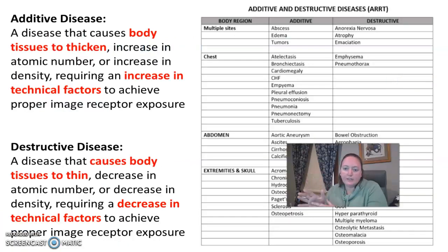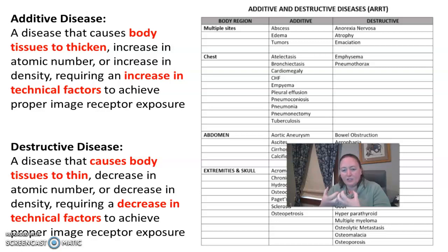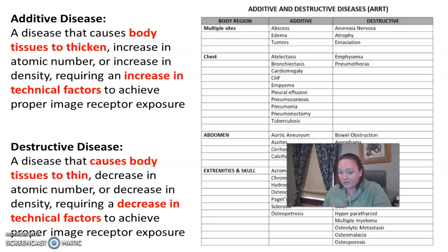This chart is giving you an idea of what locations you'll find these pathologies and whether they are additive or destructive. Additive is something that's adding to the body — it's going to cause something to thicken, increase the atomic number, and increase the density. For your ART, additive diseases require an increase of your technical factors.